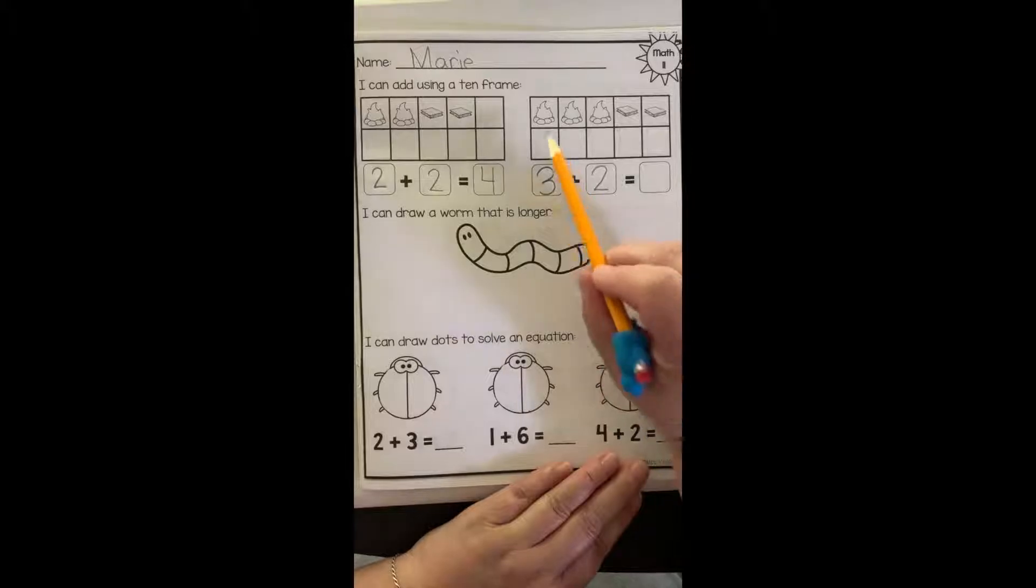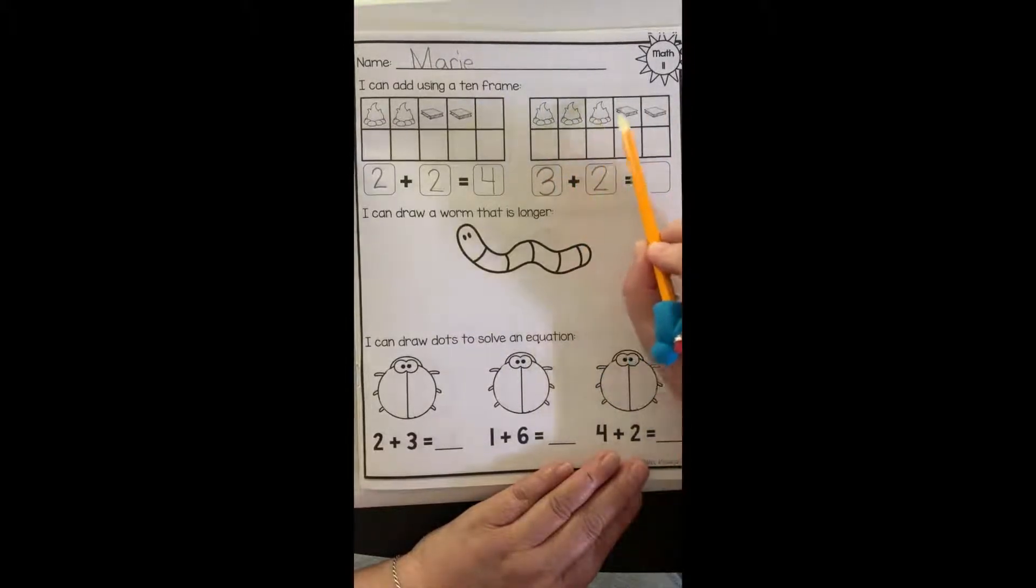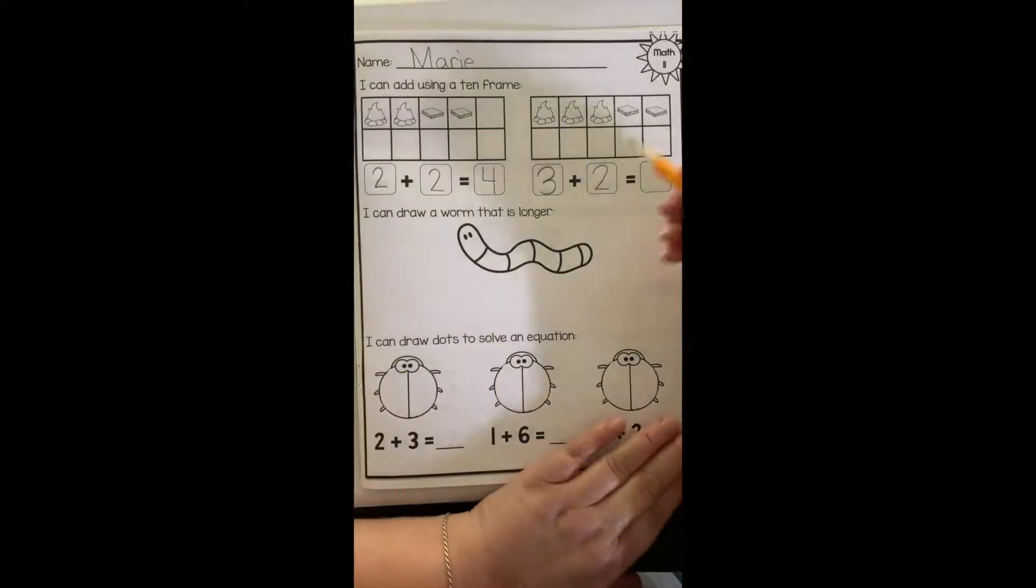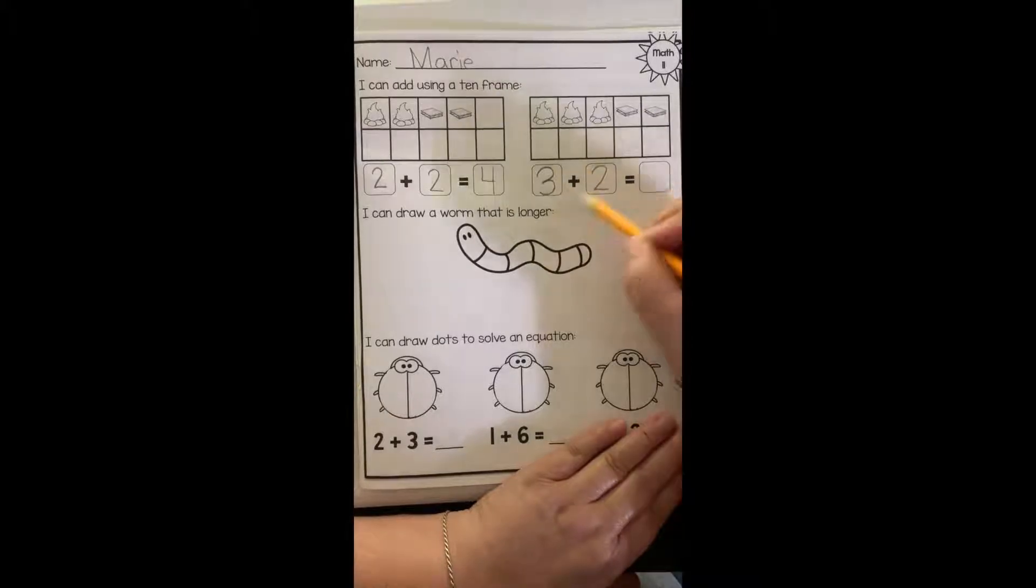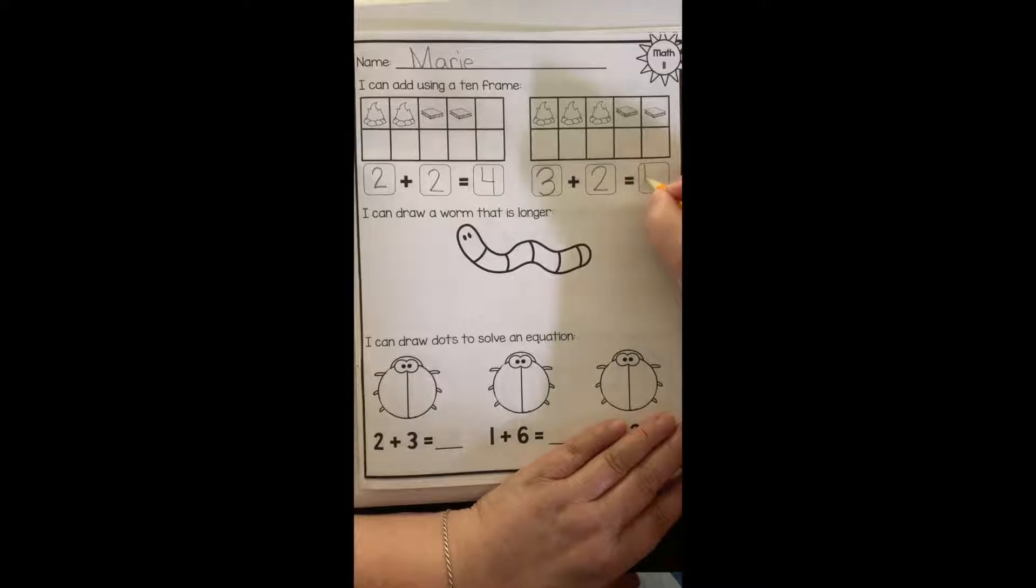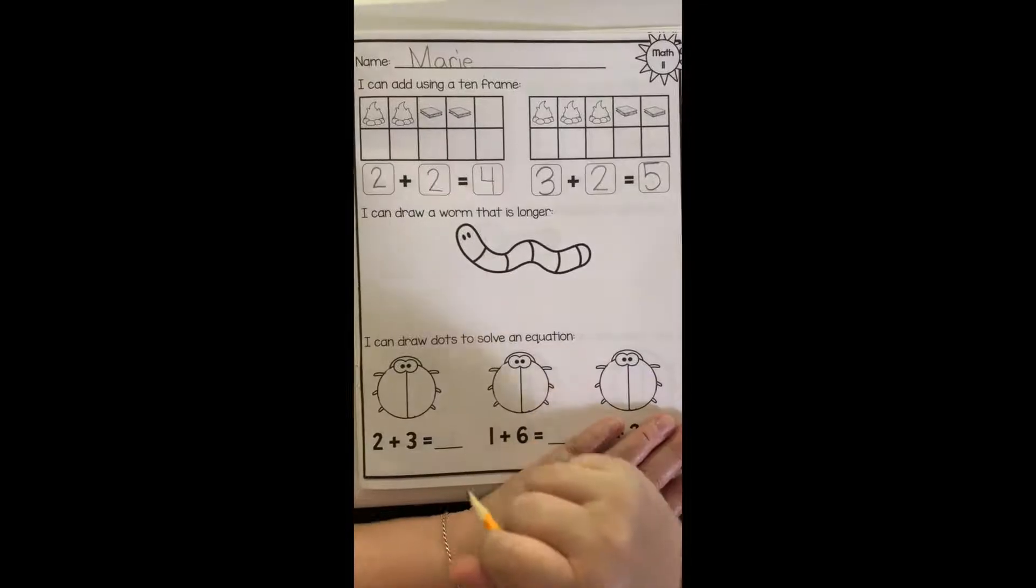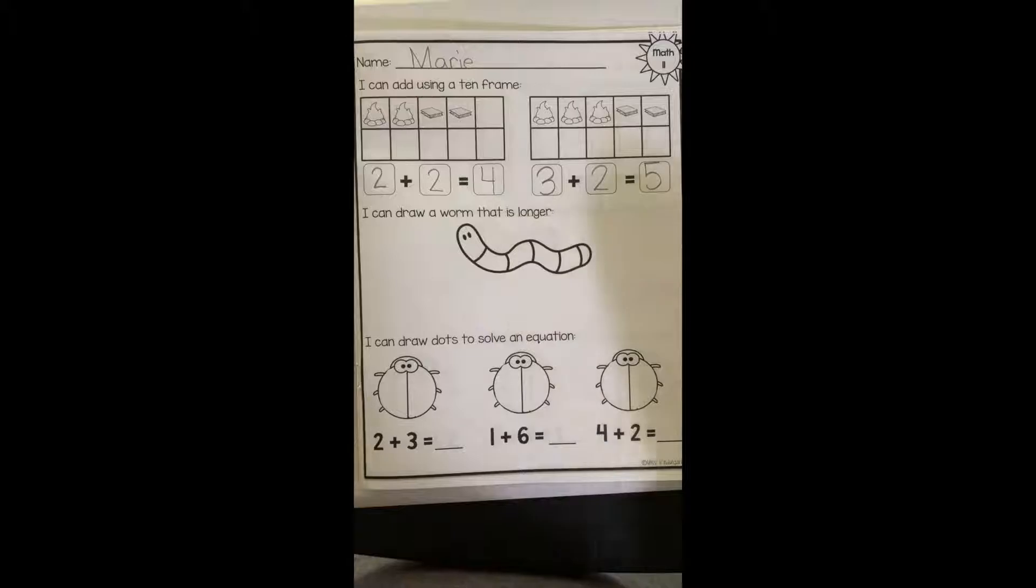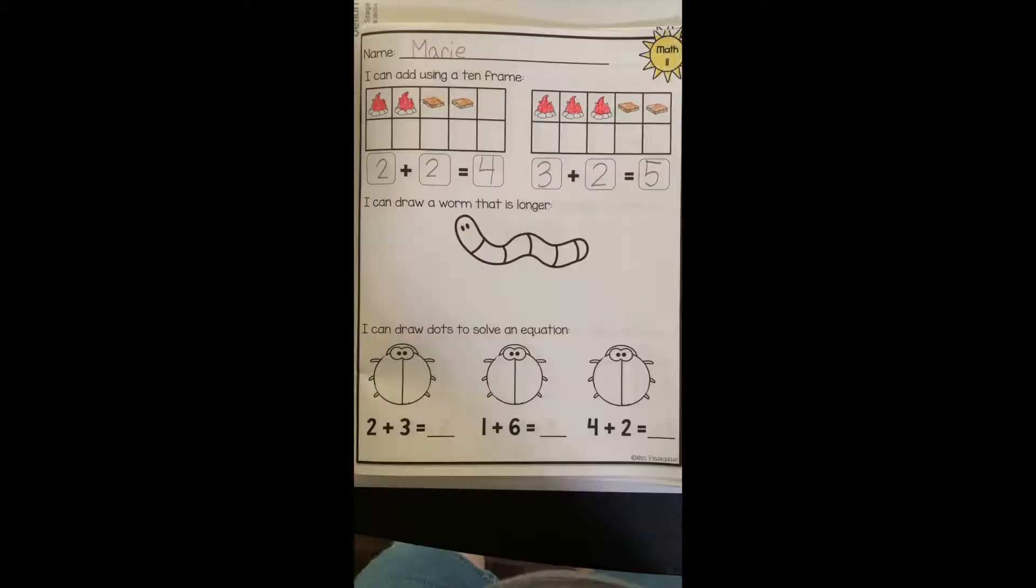Now I need to know how many all together. So I'm going to count all together. One, two, three, four, five. There are five objects all together because when we're adding, we're putting them together all together. So three plus two equals five. So I'm going to write my five. Make a neck and a tummy. Go back and put on his hat. That's how you write a number five. Now I want to build up my finger strength. So I'm going to color in my pictures.